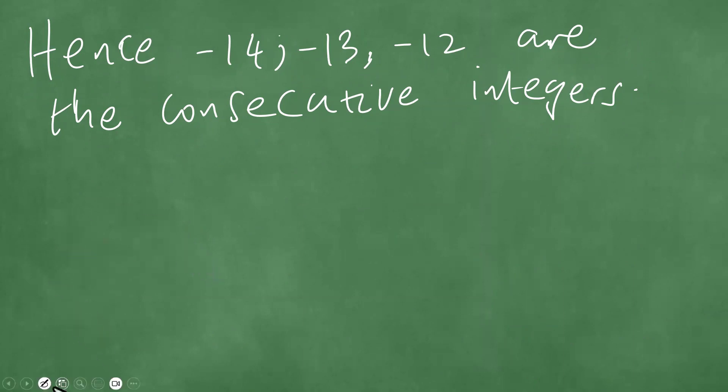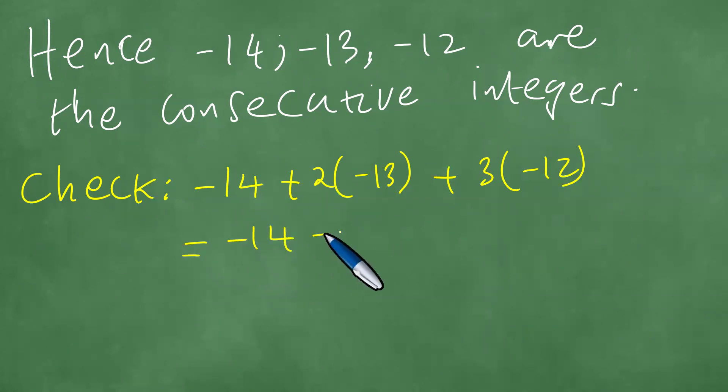If you do a check, you need to find the sum of the first plus twice the second plus three times the third. We get minus 14, minus 26, and minus 36. The sum of this is actually minus 76, which is the sum given to us. We are very excited about this, and we can be rest assured that this is the solution to the problem.